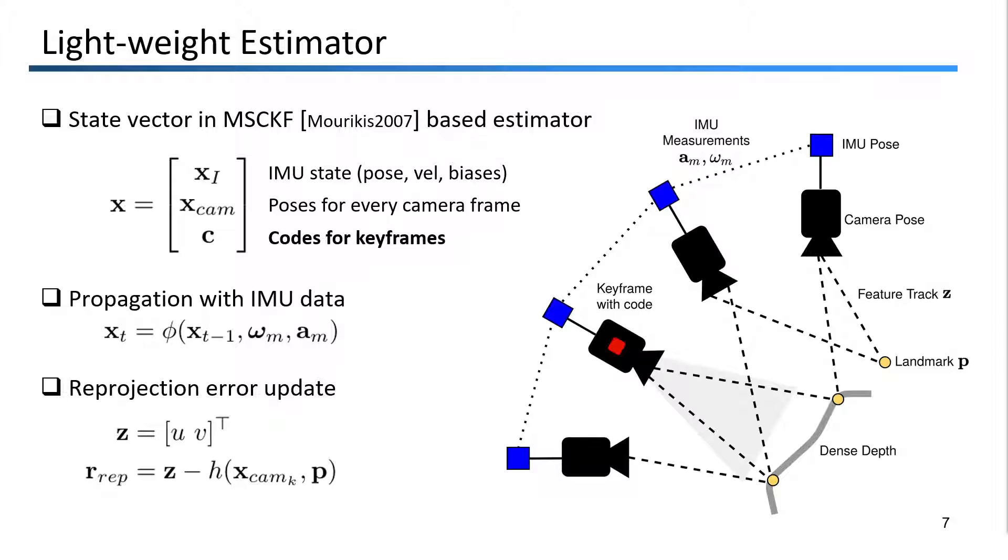In the update phase, we use the standard reprojection error to correct the state. That is, given a 2D feature track Z, we project the triangulated point P into the current camera frame that Z was measured in and compare the image coordinates. This is reflected in the figure on the right, where you can see the sensor platform containing a single camera and IMU traversing the environment and observing the same landmark multiple times. The difference here between our system and typical VIO is the depth code highlighted in red for a keyframe, which predicts a dense depth map in its field of view.